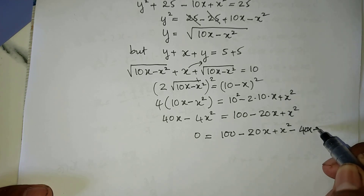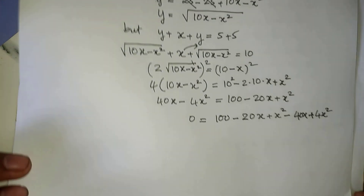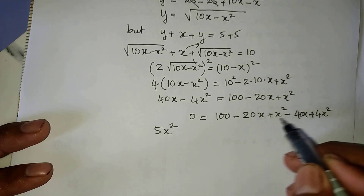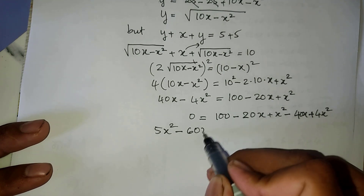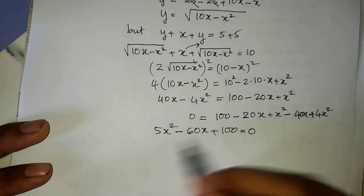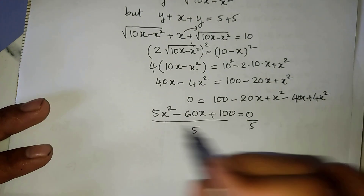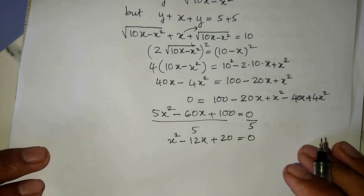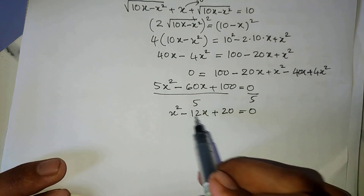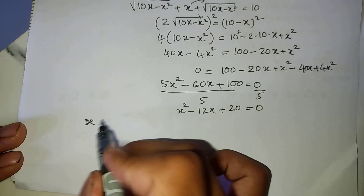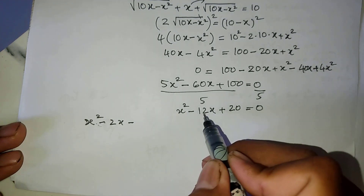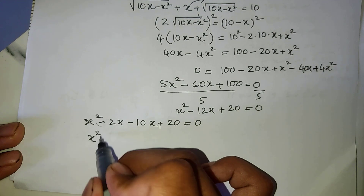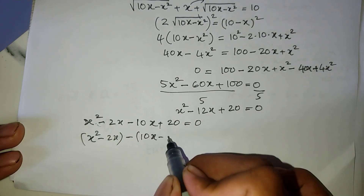Moving all terms to one side: 0 equals 100 minus 20a plus a squared minus 40a plus 4a squared, giving 5a squared minus 60a plus 100 equals 0. Dividing both sides by 5, we get: a squared minus 12a plus 20 equals 0, which simplifies to a squared minus 2a minus 10a plus 20 equals 0.